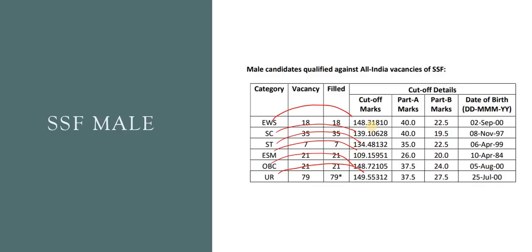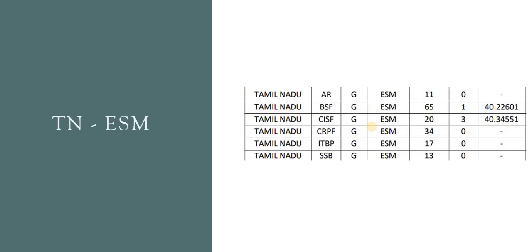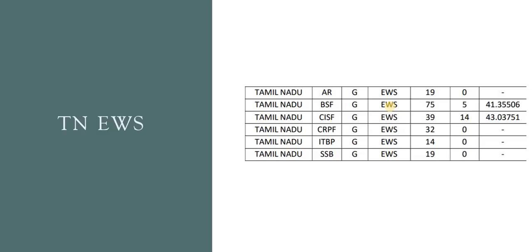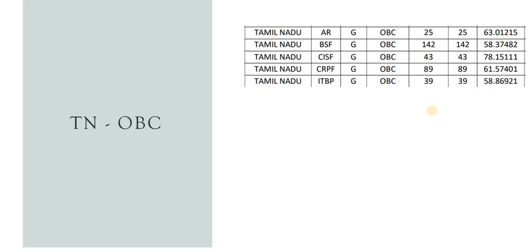If you want to select it in Tamil Nadu, you can select it. You can select Assam Rifles, BSF, and CSF. You can select the EWS. If you want to select OBC candidate — Assam Rifle is 63, BSF is 58, CSF is 78, CRPF is 61 — but you can select the ITBP as well.